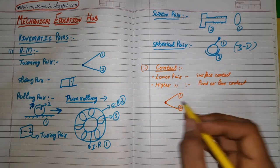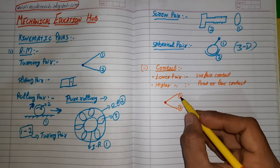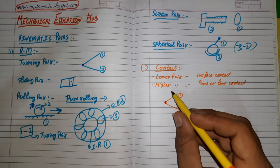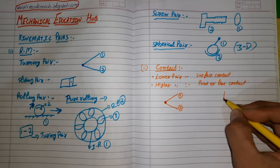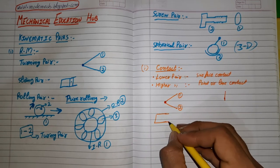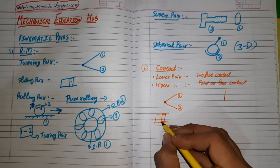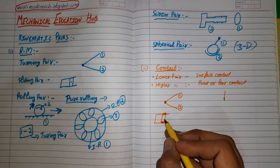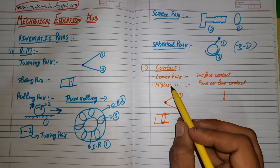A pin joint is a good example of a lower pair because the entire surface of the pin rubs against link one and link two whenever both links are in motion. A piston-cylinder arrangement is also a good example of a lower pair, as the outer surface of the piston rubs against the cylinder during relative motion, making it surface contact.